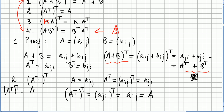A has entries A_ij. A transpose has entries A_ij transposed, so you reverse the rows and columns, giving A_ji. Then A transpose transpose gives A_ji transposed, and reversing rows and columns gives back A_ij, which is A. So A transpose transpose equals A. And that concludes the proof.